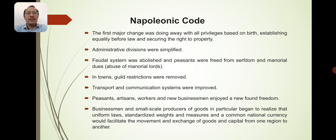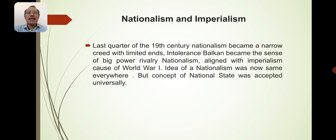Nationalism and Imperialism: in the last quarter of the 19th century, nationalism became a narrow creed with limited aims and intolerance. The Balkans became a source of big power rivalry. Nationalism aligned with imperialism caused the First World War. The idea of nationalism was now the same everywhere, but the concept of the nation state was accepted universally — nationalism had started to become a universal reality.